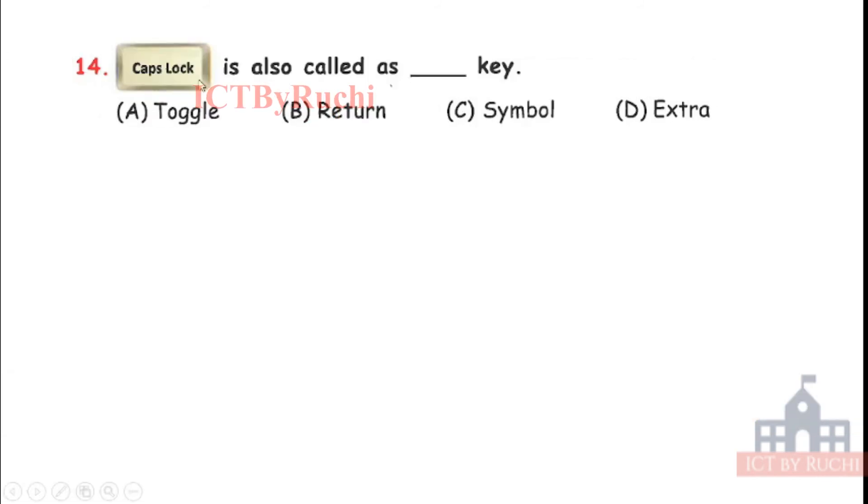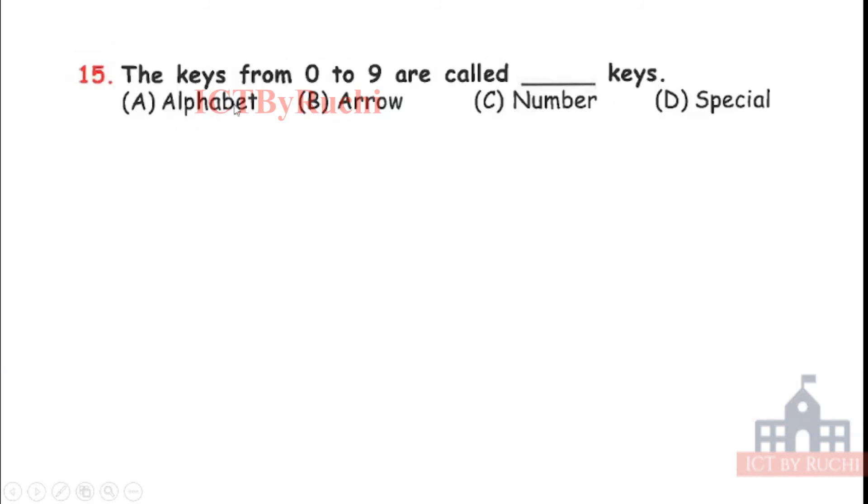Next question. Caps lock is also called a dash key. Toggle, return, symbol or extra? Answer is A. Caps lock is also called a toggle key. The keys from 0 to 9 are called dash keys. Alphabet, arrow, number or special? Answer is C, number key. As we can say 0 to 9 are numbers.